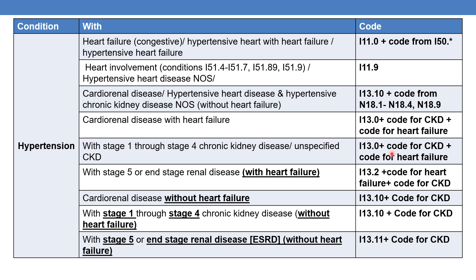For stage 1 to 4 or unspecified stage with heart failure, use I-13.0. For stage 5 and stage 6 — which is end-stage renal disease — the code is I-13.2 plus code for heart failure plus code for CKD. For hypertension with cardio-renal disease without heart failure, use I-13.10. Here we need I-13.10 plus the CKD code because there is no heart failure — only two codes are essential. For stage 1 through stage 4 CKD without heart failure, code I-13.10 plus the CKD code. If it is stage 5 or ESRD without heart failure, code I-13.11 plus the CKD code.